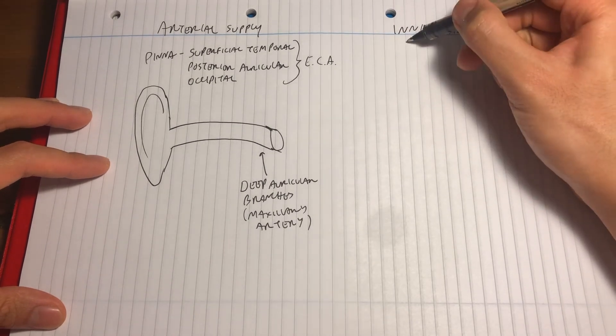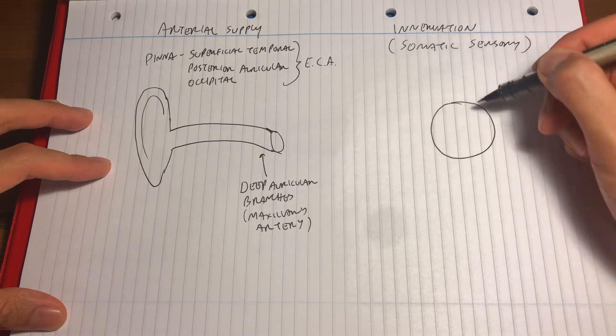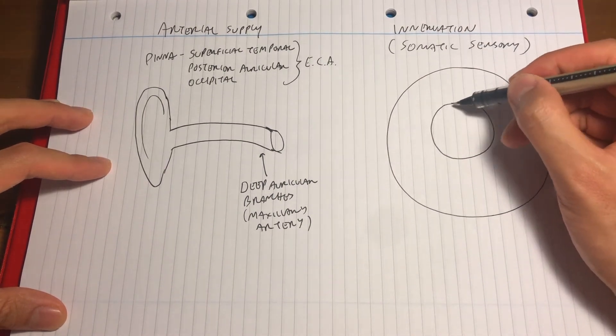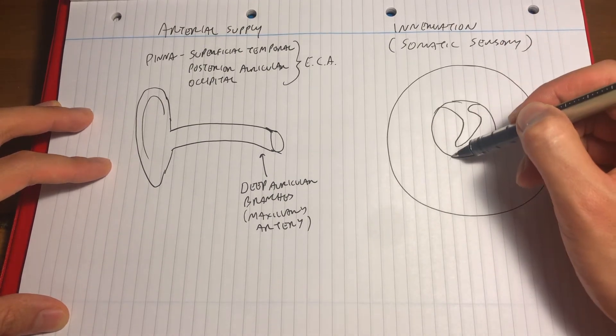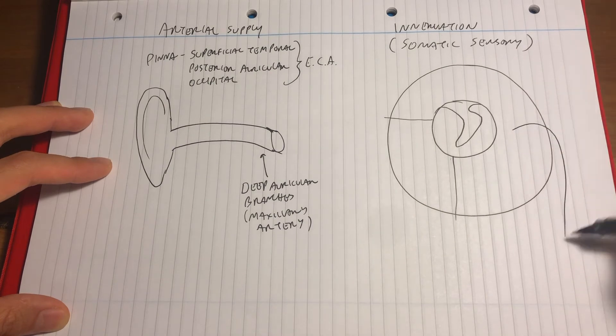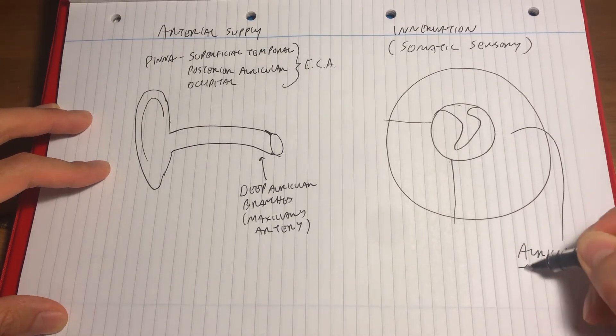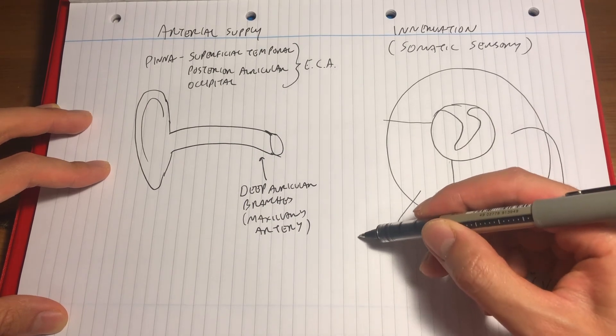The innervation of the external acoustic meatus is also similar to the pinna. So superiorly, it's supplied by the auriculotemporal nerve, a branch of the mandibular nerve. And posteriorly and inferiorly, there are branches from the vagus nerve, and also some from the facial nerve.